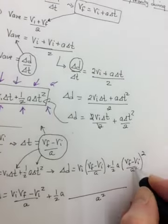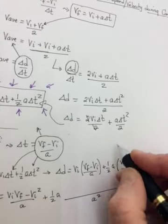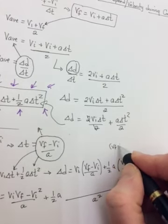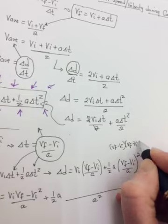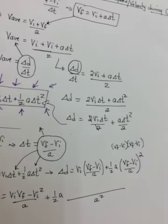And this will be a on the bottom, a squared on the bottom. Now remember, squaring VF minus VI, so that's like VF minus VI times VF minus VI. Right? When you square it, you have to FOIL it. So we'll get, put this in brackets here.